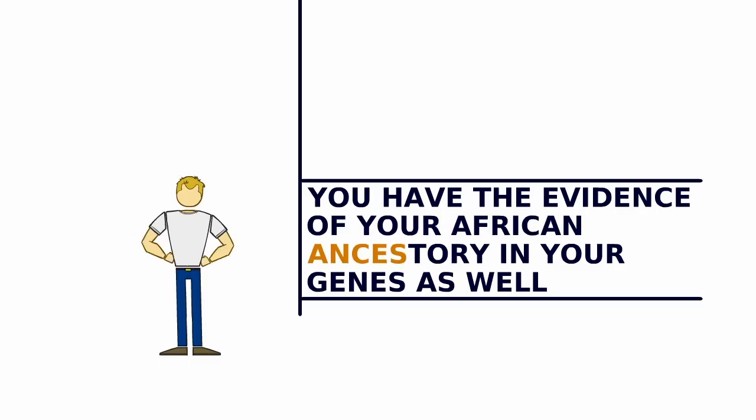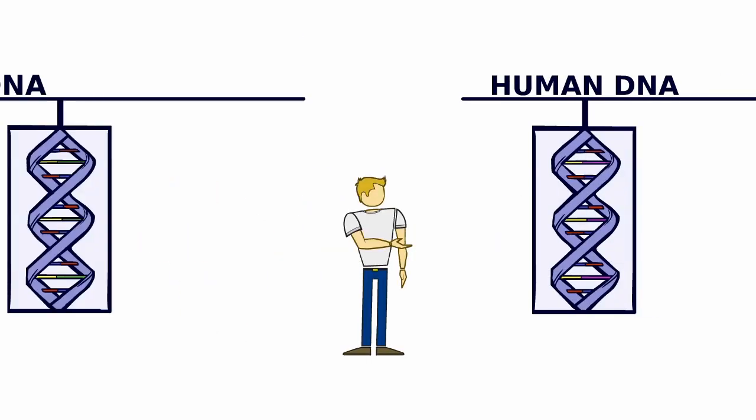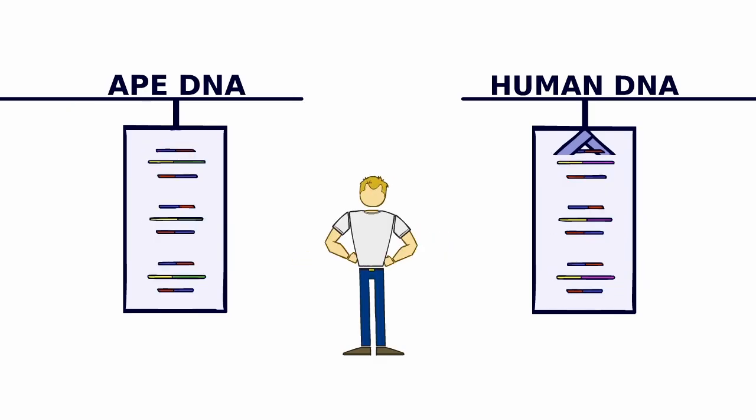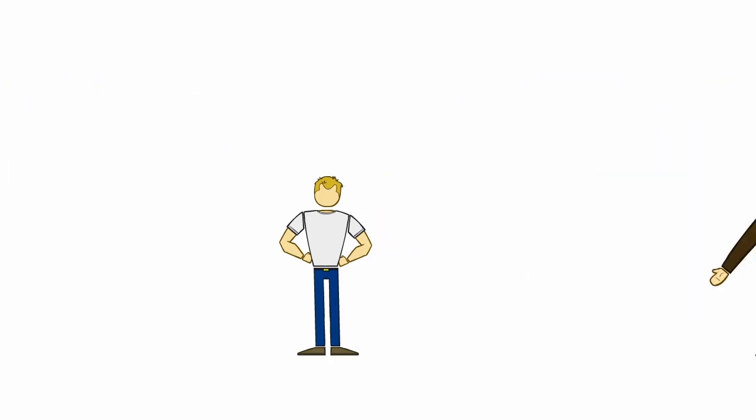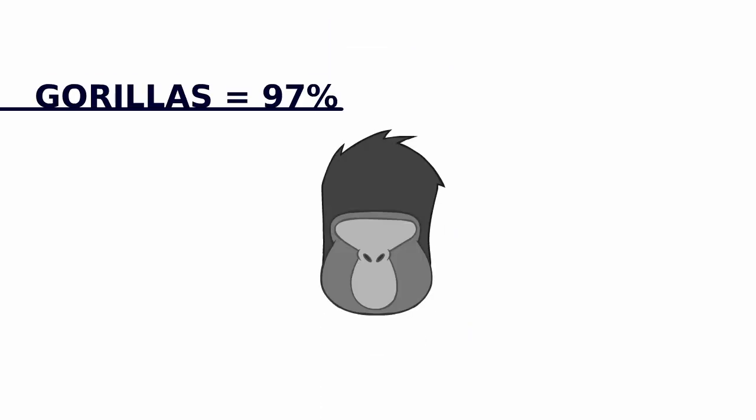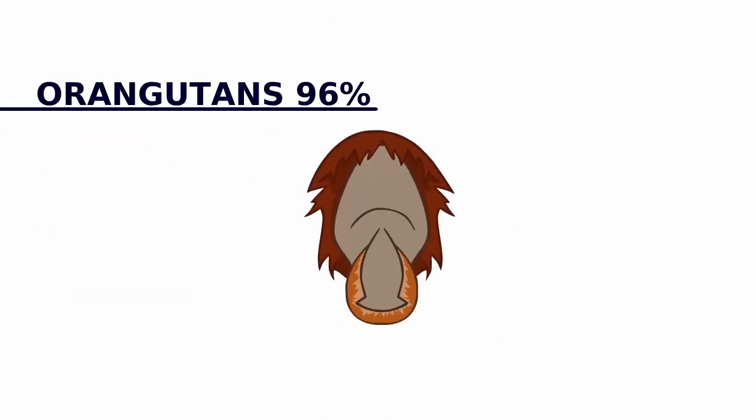You have the evidence of your African ancestry in your genes as well. When geneticists started comparing human DNA with ape DNA, the startling similarity between our strands was undeniable. Studies on the amino acid sequence of our DNA proved Darwin's initial hypothesis. Chimpanzees were our closest living relatives, followed closely by gorillas and then orangutans.